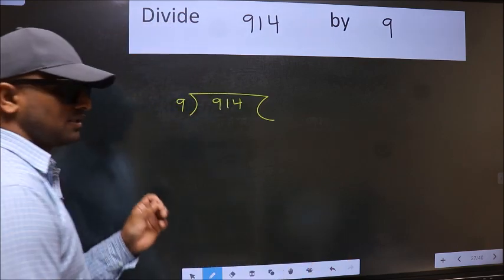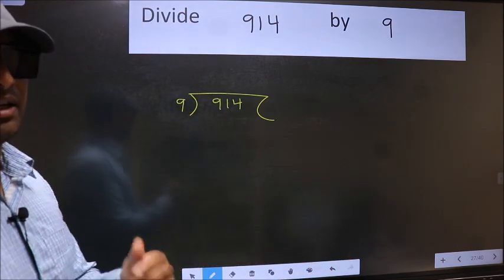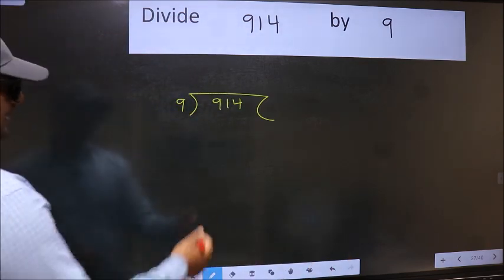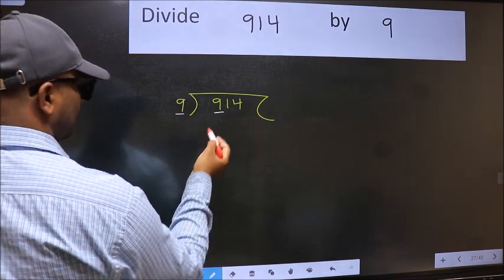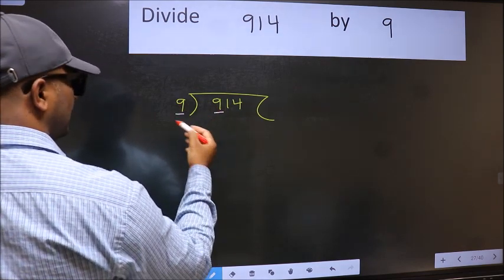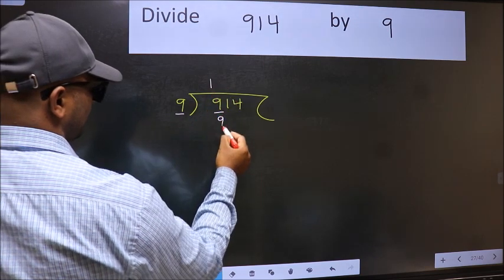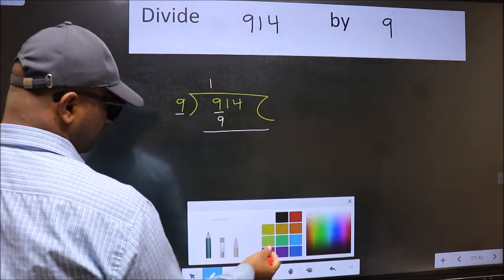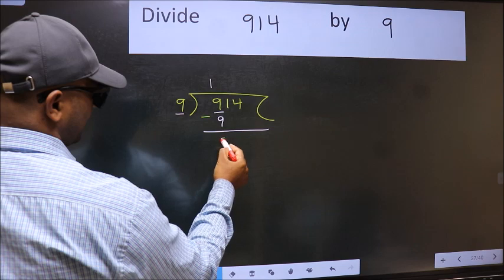This is your step 1. Next. Here we have 9 and here 9. When do we get 9 in 9 table? 9 once 9. Now we should subtract. We get 0.